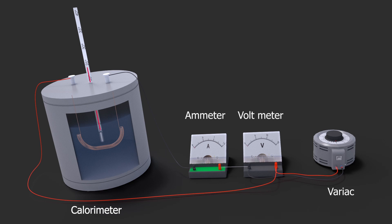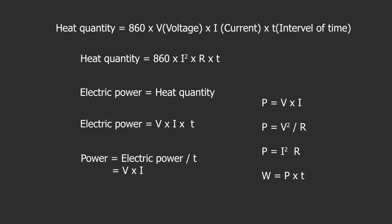When current is passed through nichrome wire in water, current is converted to heat and the temperature rises. Work done by heat generated in an electrical circuit is called electric power. Electric power is measured in watt-hours and heat quantity is measured in calories. Electric power equals V (voltage) × I (current) × T (time), meaning V×I×T. Power is the rate of work done in a circuit when one amp flows with one volt applied, and its unit is the watt. Power equals electric power divided by T, which equals V × I. In summary: P = V×I, P = V²/R, P = I²×R, and W = P×T.